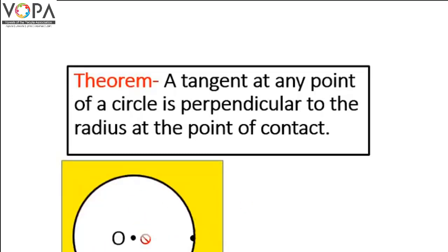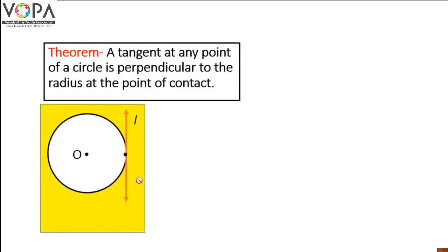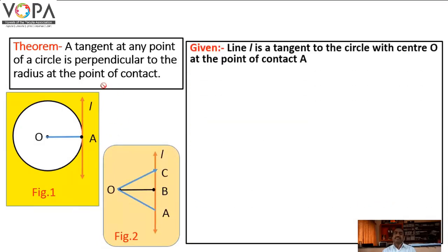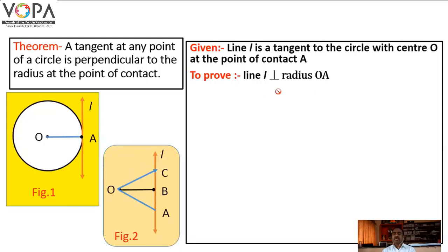Given: In a circle with center O, tangent line L touches the circle at point A. A radius OA is drawn through the point of contact A. To prove: Line L is perpendicular to radius OA.